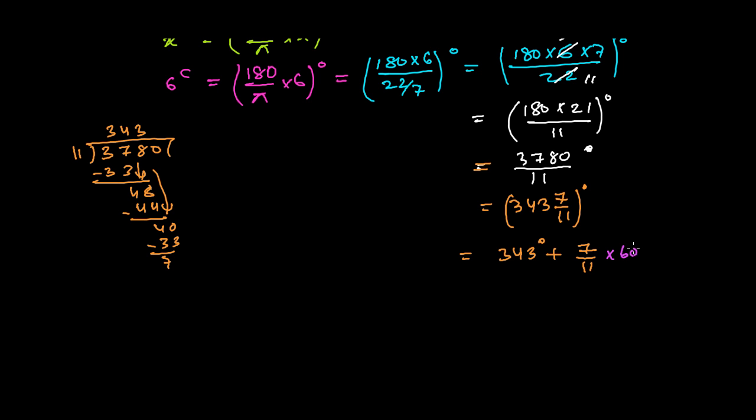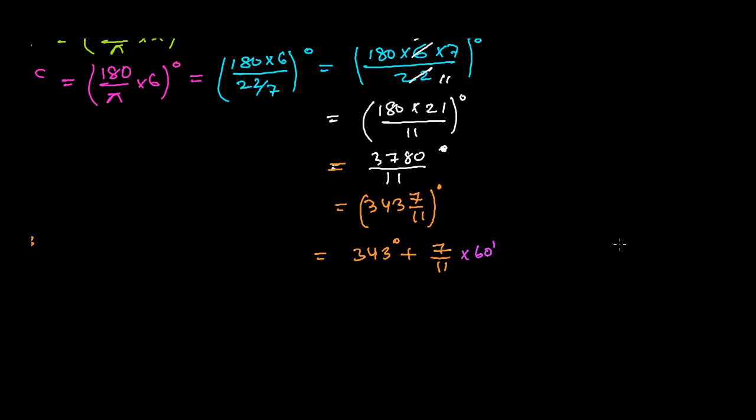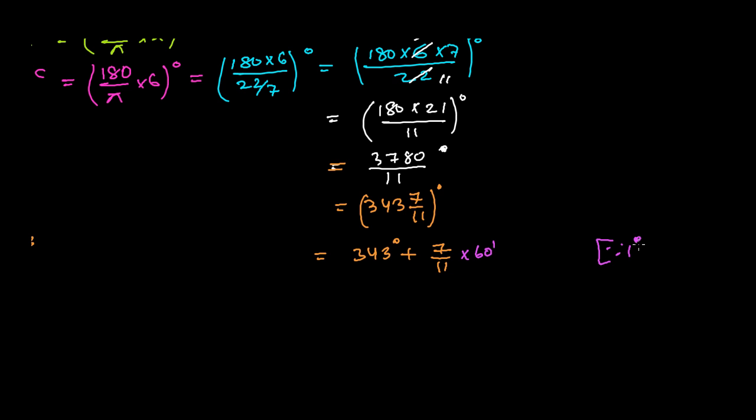Since this is degrees, to convert this degree into minutes I'm going to multiply by 60 minutes, because 1 degree equals 60 minutes. So 7 by 11 degree will be 7 by 11 into 60 minutes.